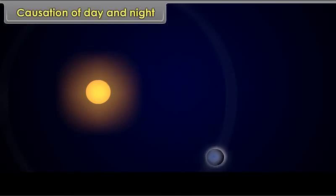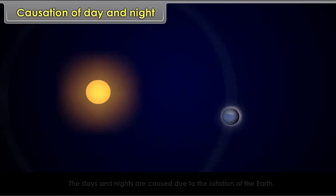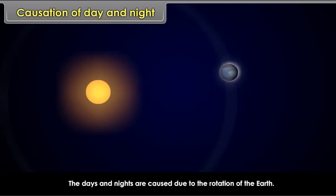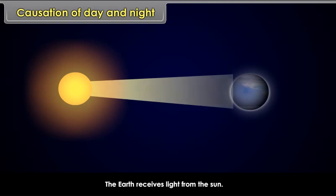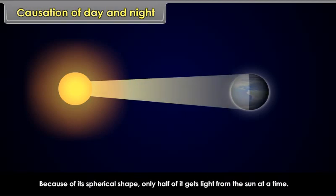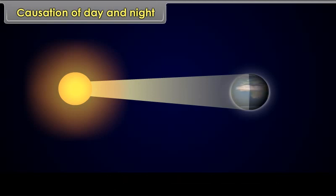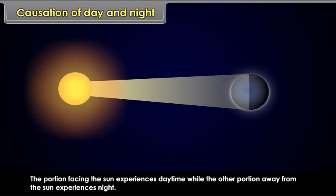Causation of day and night. Days and nights are caused due to the rotation of the earth. The earth receives light from the sun. Because of its spherical shape, only half of it gets light from the sun at a time. The portion facing the sun experiences daytime while the other portion away from the sun experiences night.